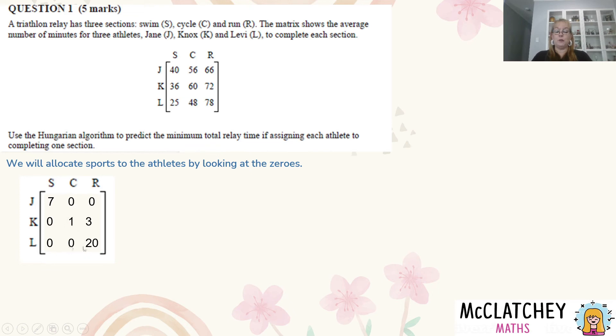So because Knox doesn't have multiple choices, Knox just gets that one sport - Knox is going swimming. That means Levi can no longer do the swim, has to do the cycle. And if I've eliminated the cycle and if I've eliminated the swim, that means the run must go to Jane. So now I've got those.